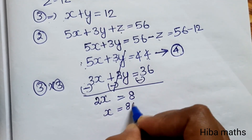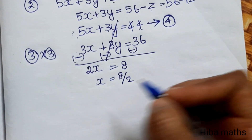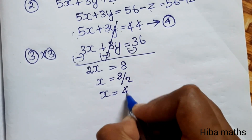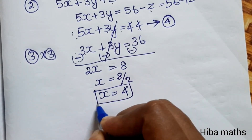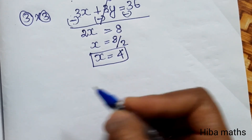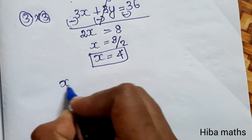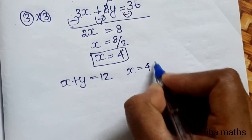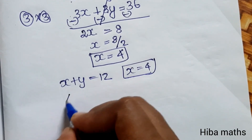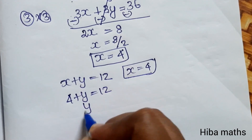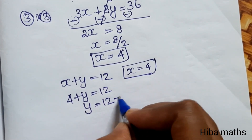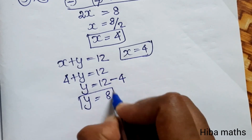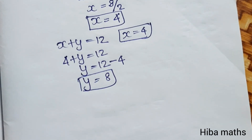So x equals 8 divided by 2, giving x equals 4. Now substituting x equals 4 into x plus y equals 12: 4 plus y equals 12, therefore y equals 12 minus 4, which gives y equals 8.